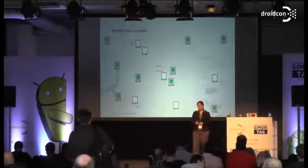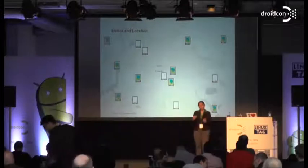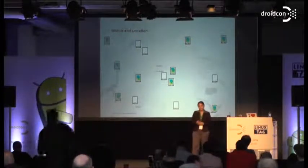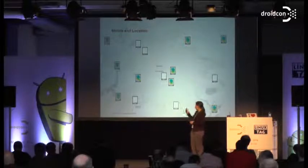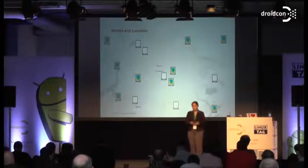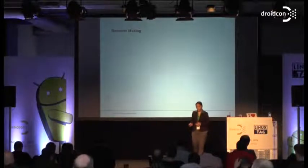Mobile and location belong to each other. Mobile devices are designed by nature for location-based applications. We all have mobile devices, so why don't we use them for applications like 'where am I' and 'where should I go'?